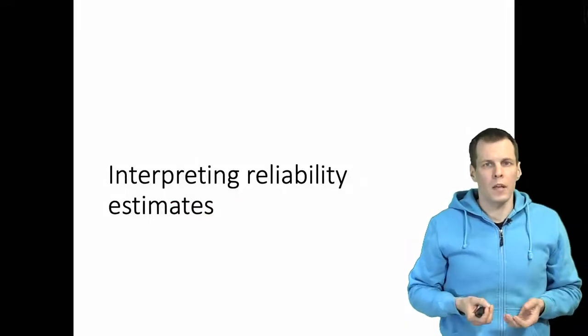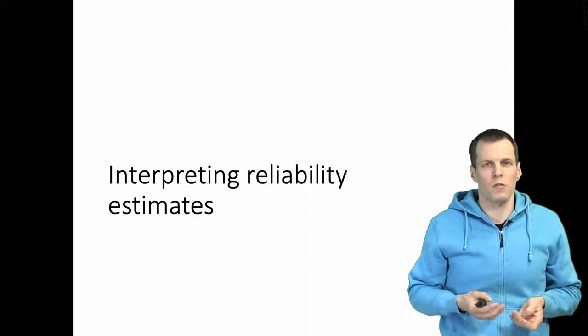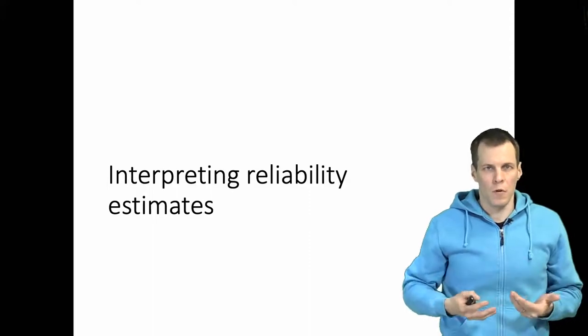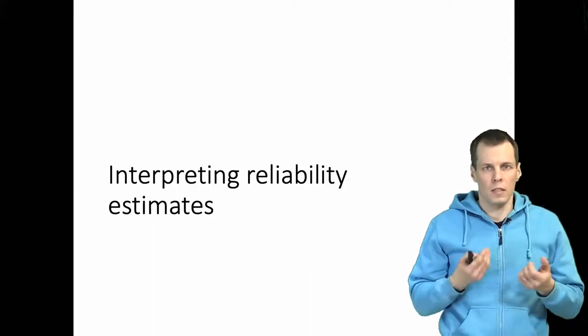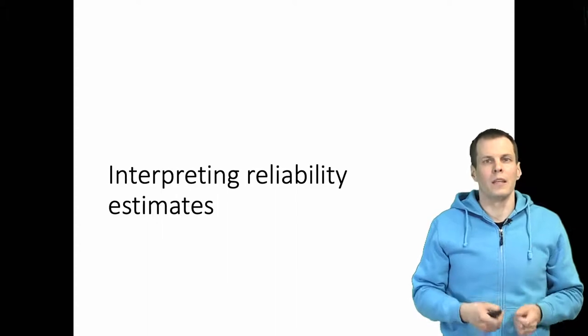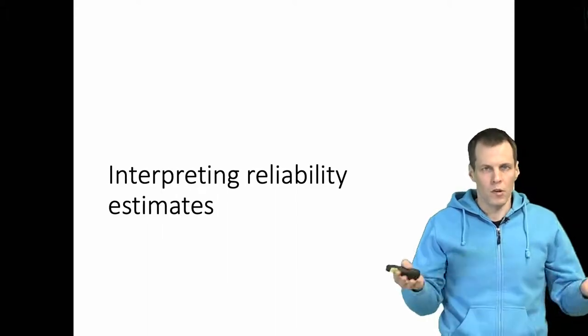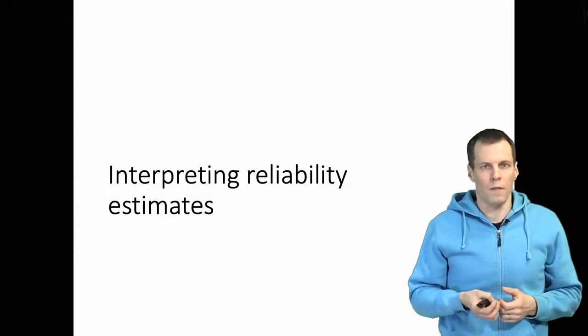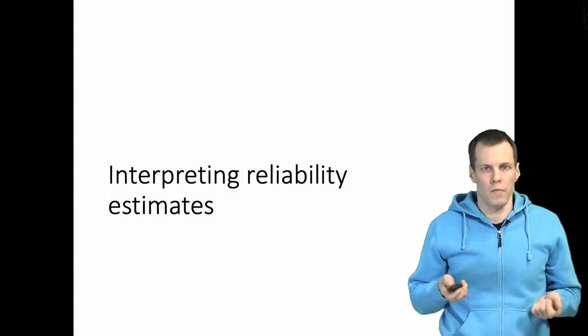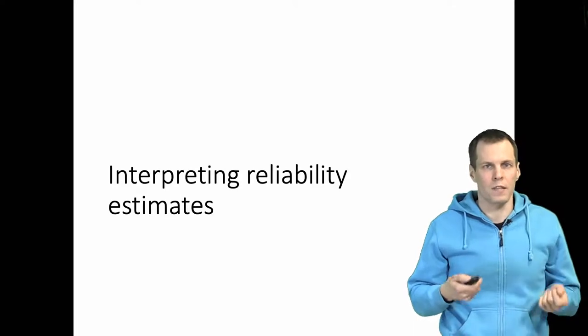When you assess the reliability of your scales or measures, there are two steps in the process. First, you need to calculate the statistic that quantifies reliability, and then you need to interpret the calculation result. So if you have coefficient alpha of 0.75, what does that actually mean? That's what I'm going to talk about in this video.